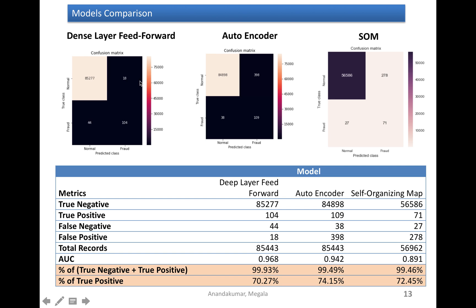And here is the comparison of these three models based on confusion matrix. And this indicates the percentage of true negative and true positive predicted by all these three models are really good. And percentage of true positive is also high, more than 70%.